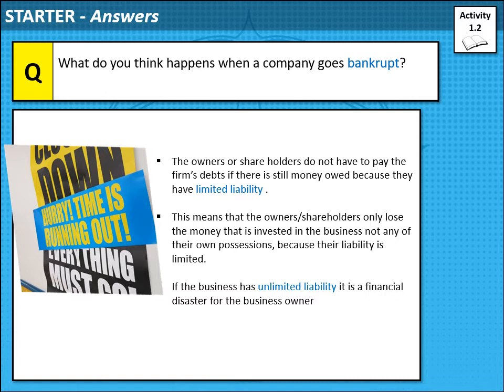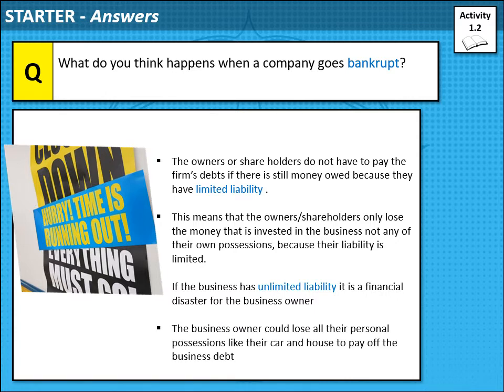But if the company has unlimited liability, it means the business owner will be liable for all the debts. He put in £10,000 — if he had limited liability, that's all he would have to pay back. But if he has unlimited liability, he will have to pay the whole thing back, all the money. So that could mean he could lose his car, his home, lots of things. The business owner could lose all their personal possessions, like their car and their house, to pay off the business debt.